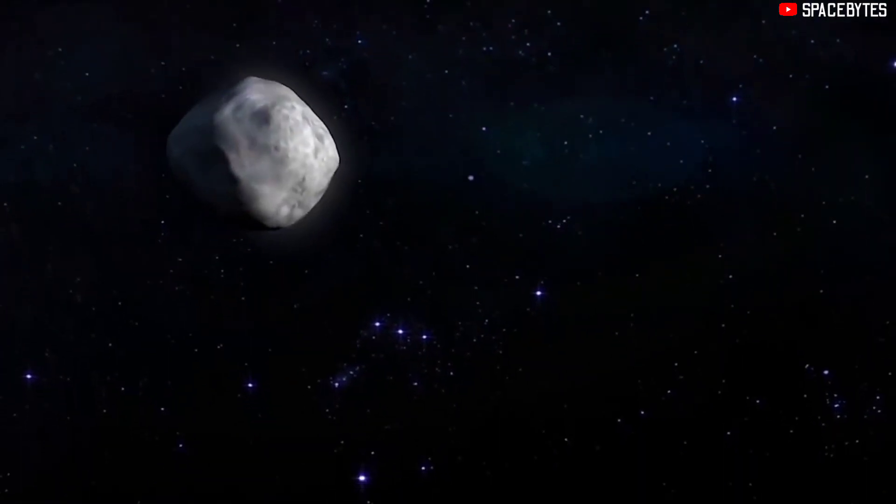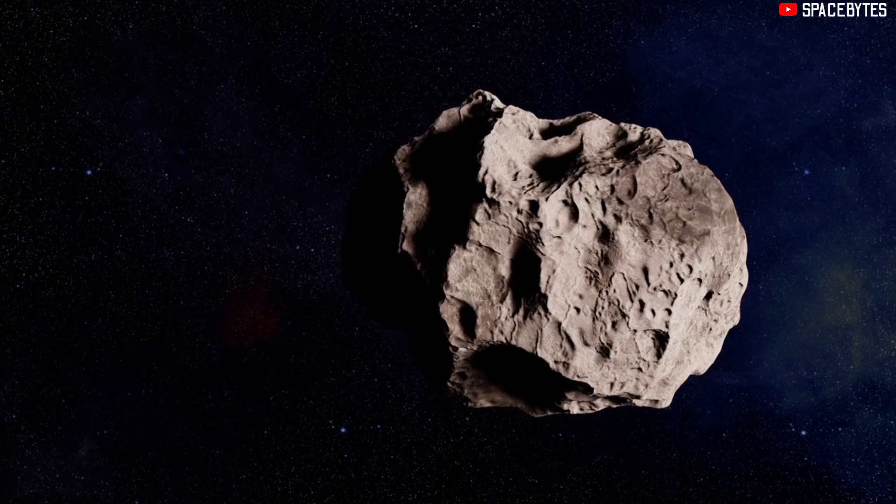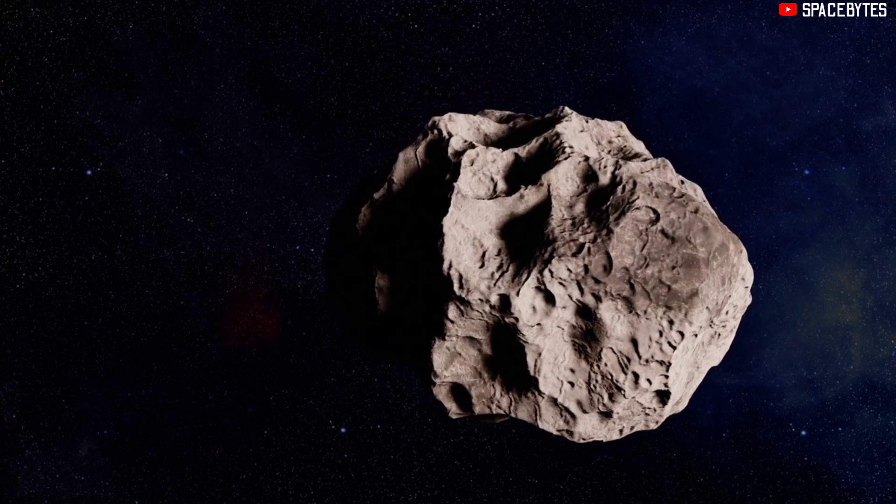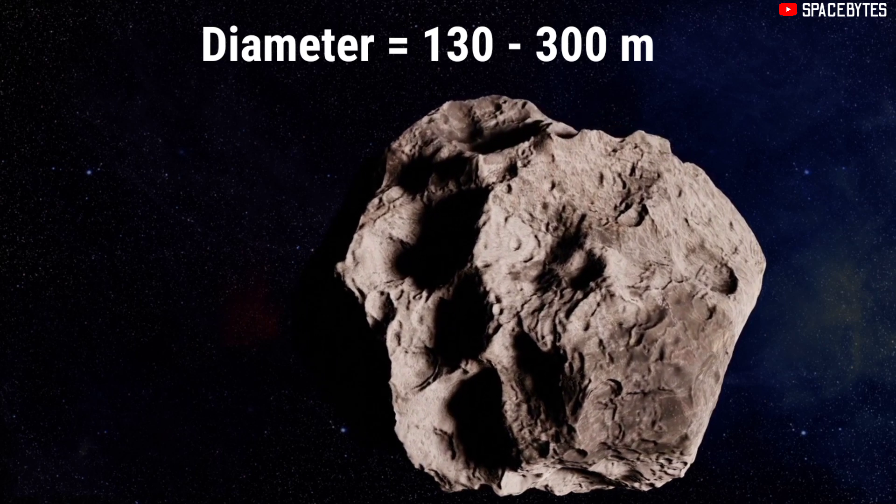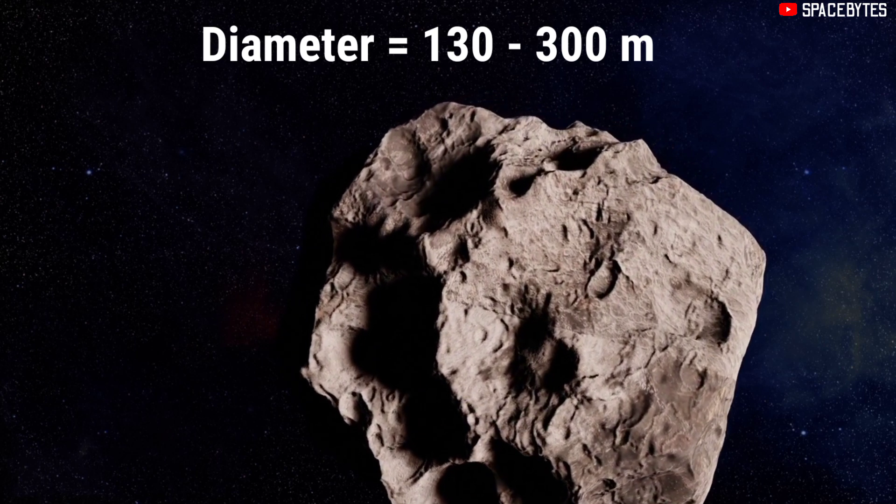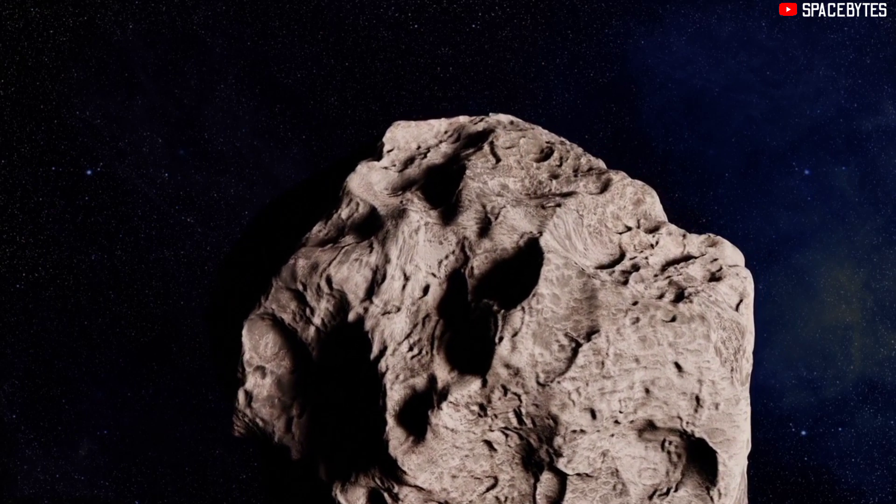According to NASA, 2021 NY1 would enter the orbit of Earth in September. NASA is tracking this giant rock which has a diameter of 130 to 300 meters. It is to be noted that the height of Statue of Liberty is only 93 meters.